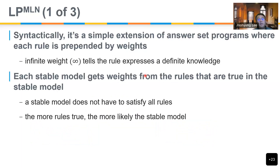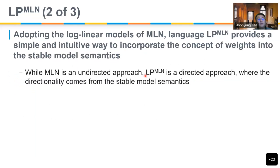In LPMLN, this case can be avoided by assigning weights to rules. Even when we write infinite weight — absolute weight — we can still resolve this inconsistency, which is an interesting feature. The idea is that a stable model doesn't have to satisfy all rules; if more rules are satisfied, that model is more likely.